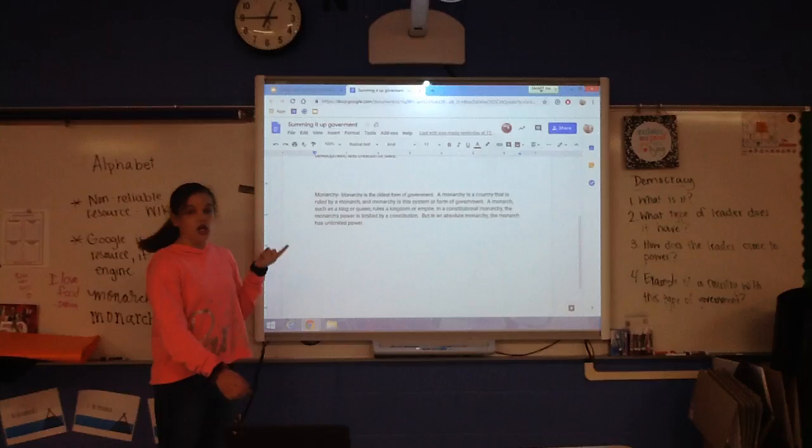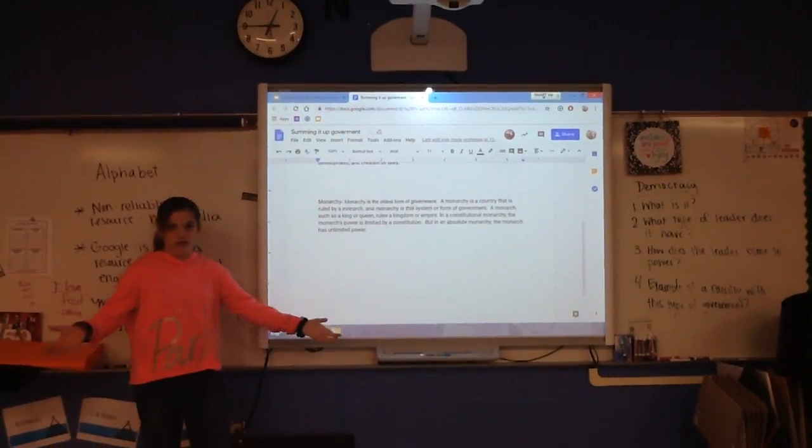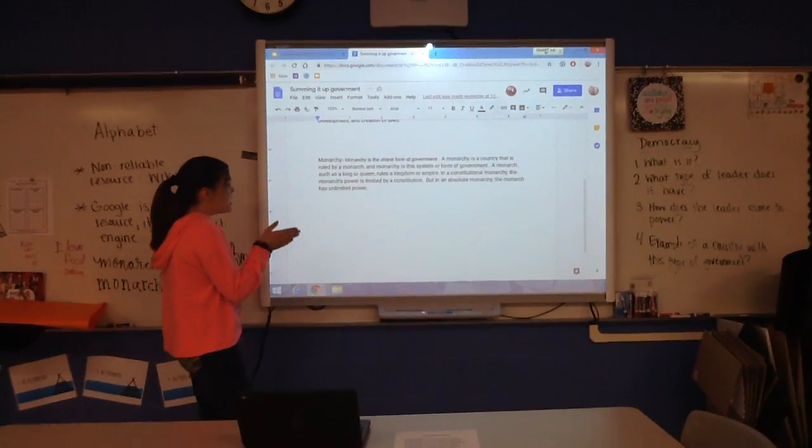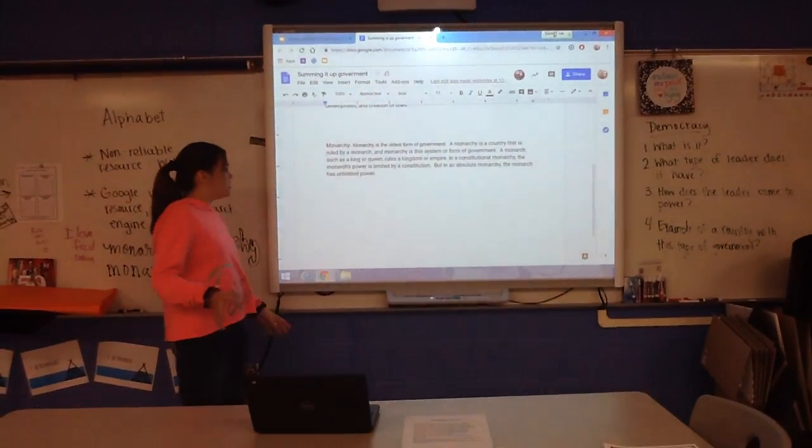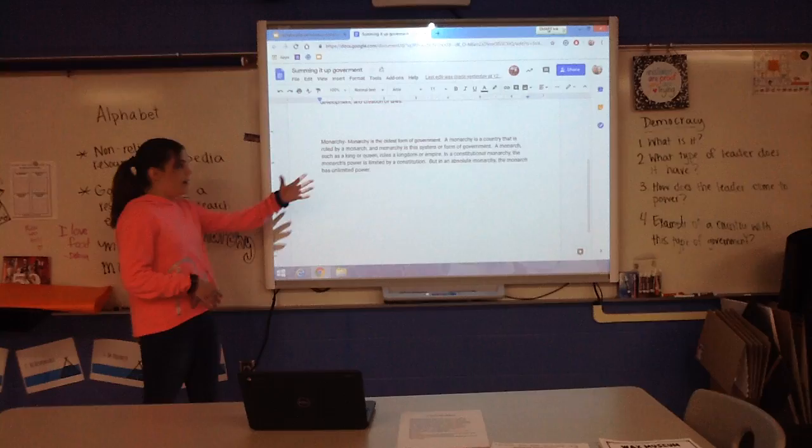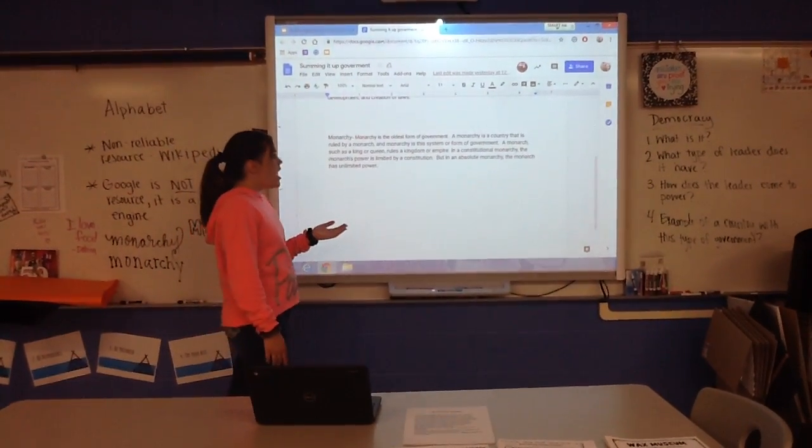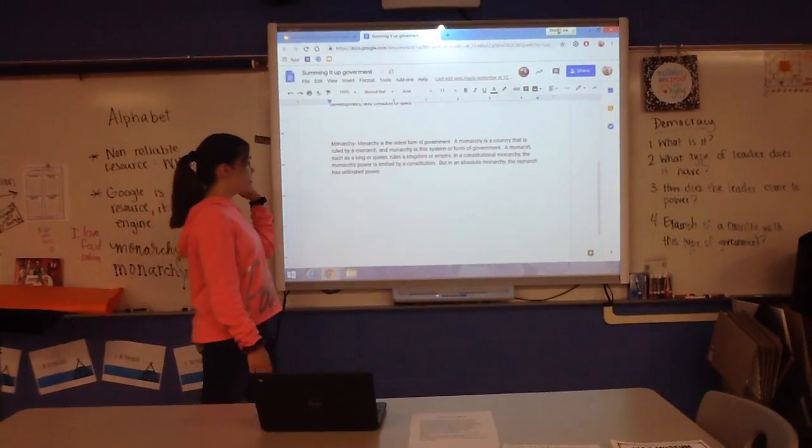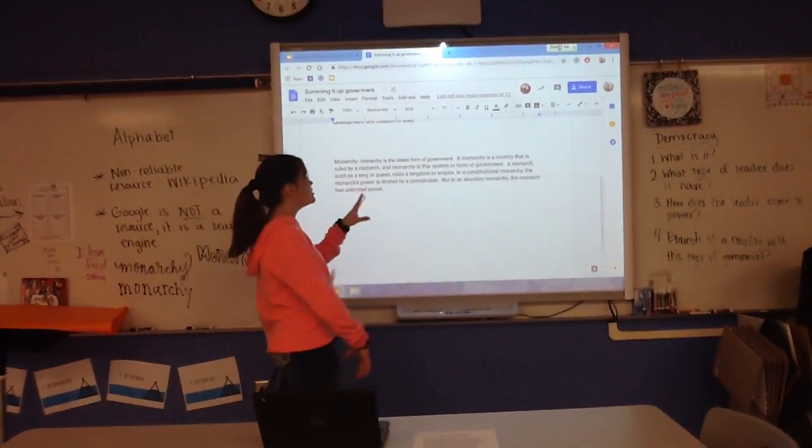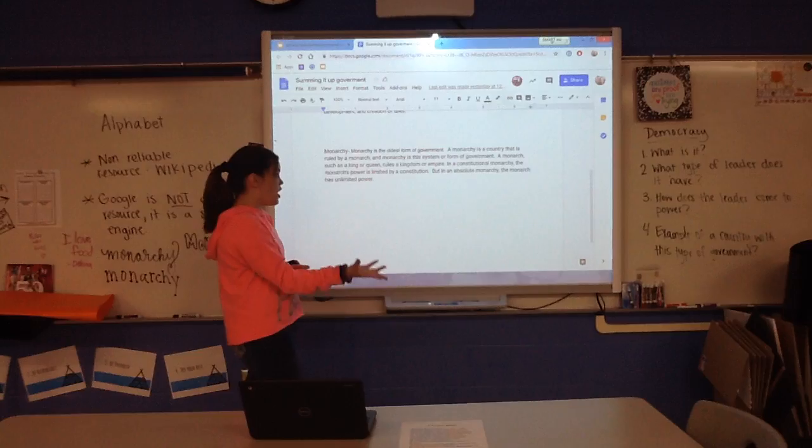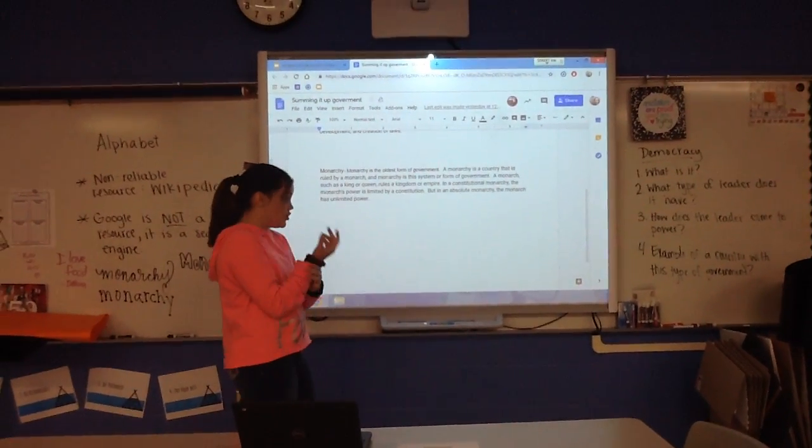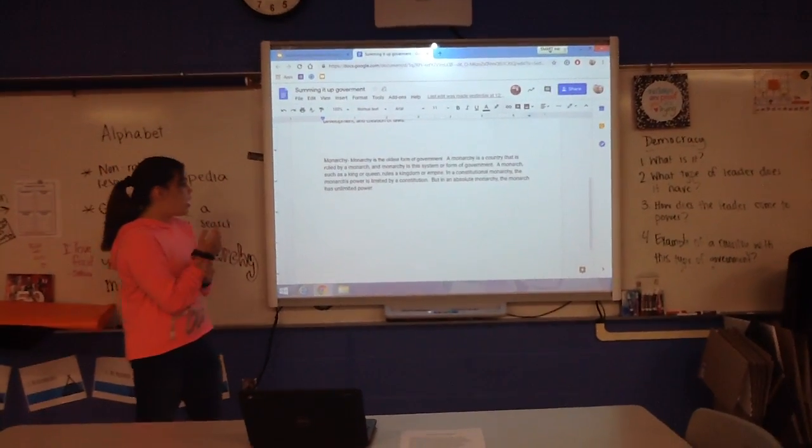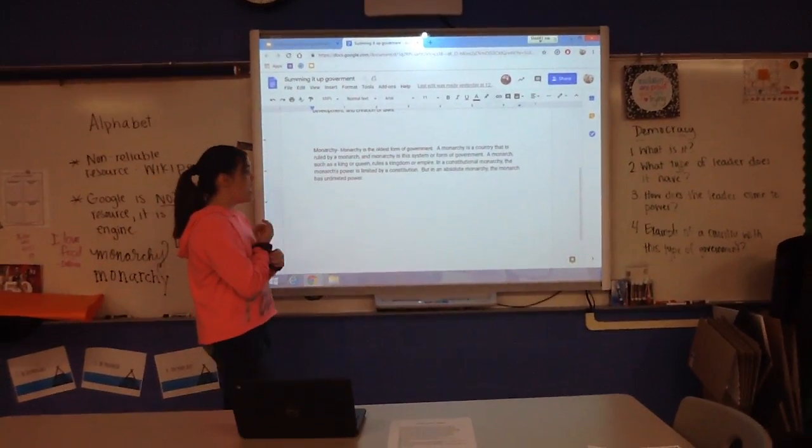And then, monarchy. Monarchy is actually the oldest form of government. A monarchy is a country that is ruled by a monarch, and monarchy is the system or form of government. A monarch such as king and queen, like we said, who is in a kingdom or empire. In a constitutional monarchy, the monarch's power is limited by a constitution.